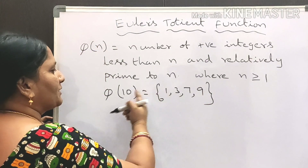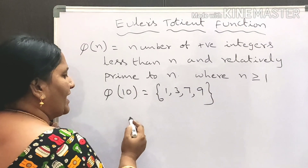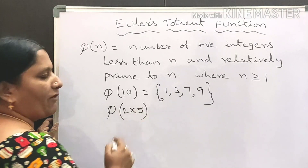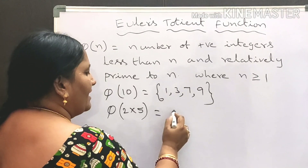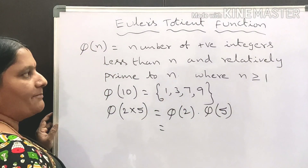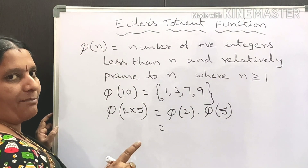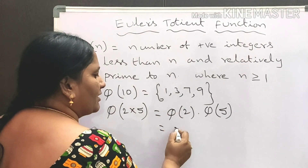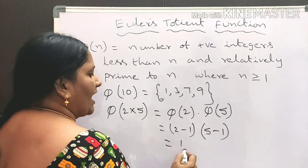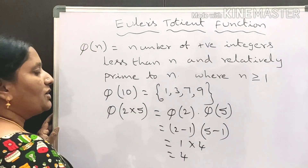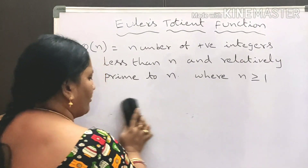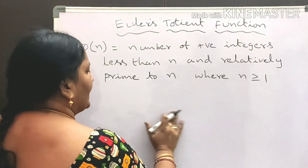GCD of 9 and 10 is equal to 1, so we take 9. So phi of 10 = {1, 3, 7, 9}. Here 10 is a composite number. Phi of 10 can be written as phi of 2 times 5, which equals phi of 2 into phi of 5. Applying the prime formula: phi of 2 = 2 minus 1, and phi of 5 = 5 minus 1, giving 1 times 4 = 4.